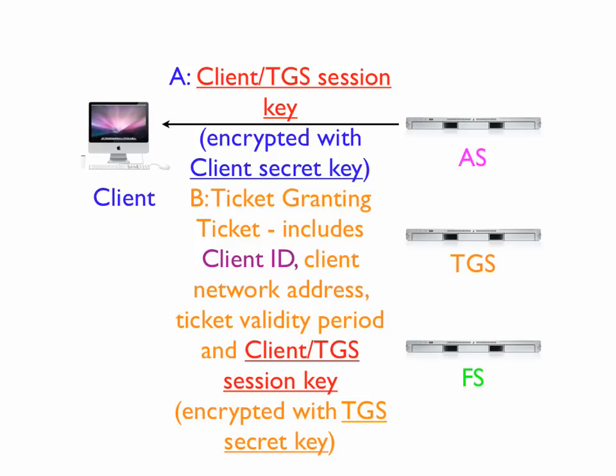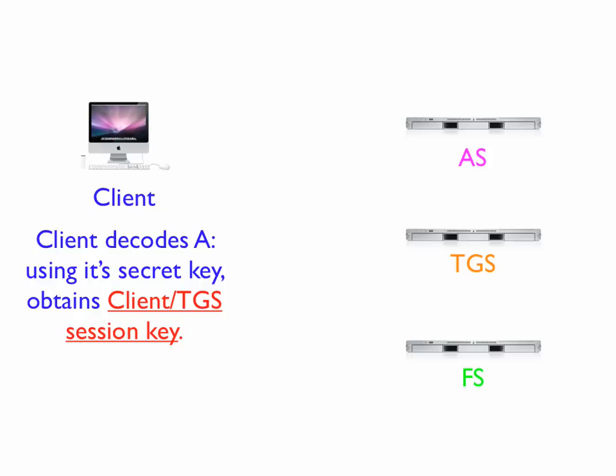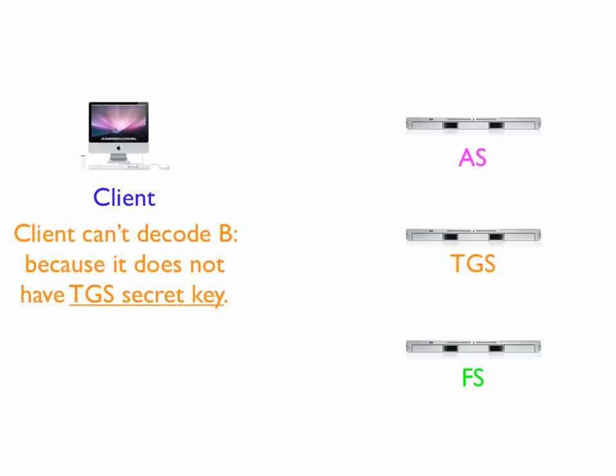The authentication server sends back two messages to the client. Message A contains a client-TGS session key, which will be used between the client and the ticket-granting server, and this is encrypted with the client secret key. Message B is the ticket-granting ticket; it includes the client ID, the client's network address, ticket validity period, and the client-TGS session key, encrypted with the ticket-granting server's secret key so only the TGS can decrypt it. The client can decode message A and obtains the client-TGS session key, but cannot decode message B because it doesn't have the TGS secret key.